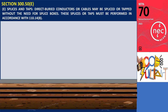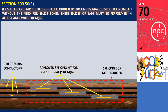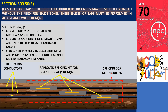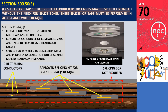Section 300.5(E), Splices and Taps: direct buried conductors or cables may be spliced or tapped without the need for splice boxes. These splices or taps must be performed in accordance with 110.14(B), which outlines the correct methods for making electrical connections, emphasizing that connections must utilize suitable materials and techniques, conductors should be of compatible sizes and types to prevent overheating or failure, and splices and taps need to be securely made and properly insulated to protect against moisture and contaminants. The accompanying photo illustrates an approved splicing kit — specifically the 3M 90NA2 Scotchcast resin cable joints — designed for straight joints, splicing, or connecting multi-core non-shielded polymeric cables with XLPE insulation and core conductors ranging from 16 mm² to 25 mm².